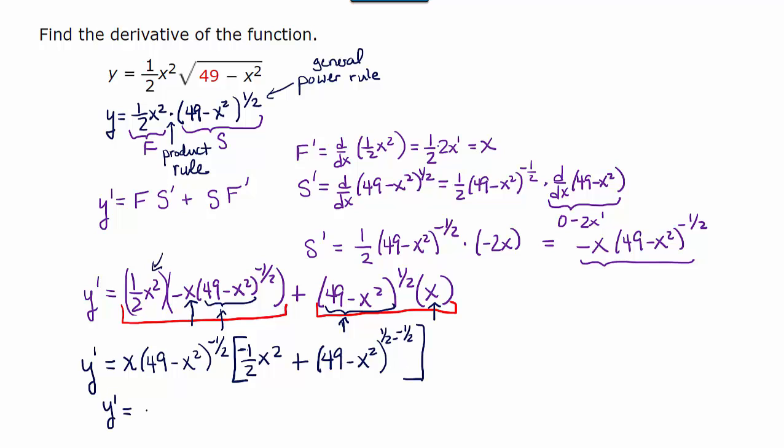So y prime is equal to x times 49 minus x squared to the negative one half. This exponent is just a one, so we have 49 minus x squared to the first power or just 49 minus x squared. We can combine like terms: negative one half x squared minus x squared gives us negative three halves x squared plus we still have this 49.